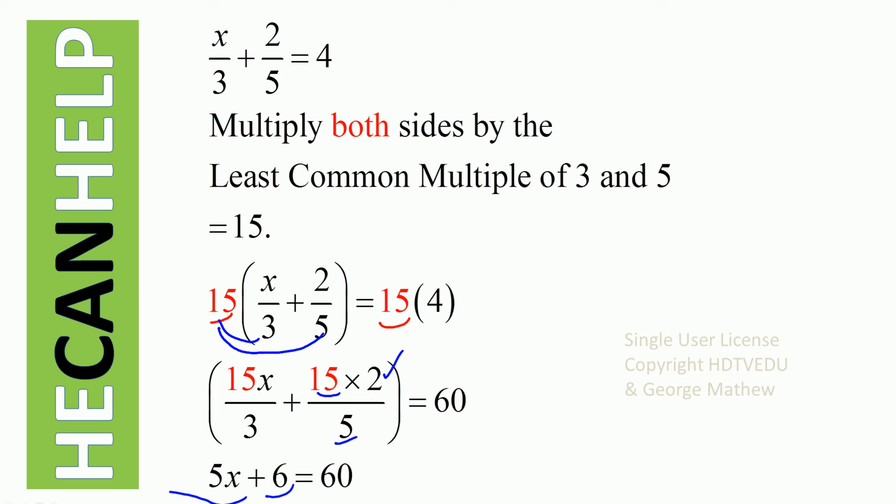5x plus 6 is equal to—what is 15 times 4? 60. So, you get 5x plus 6 is equal to 60.